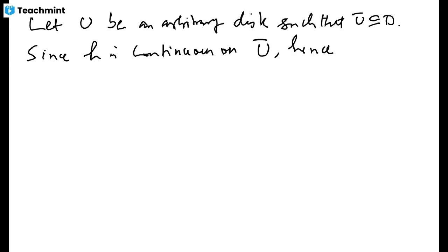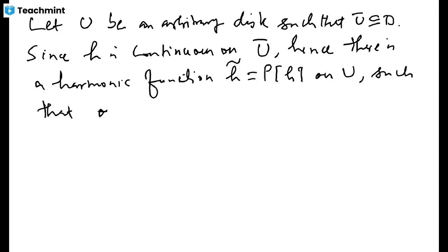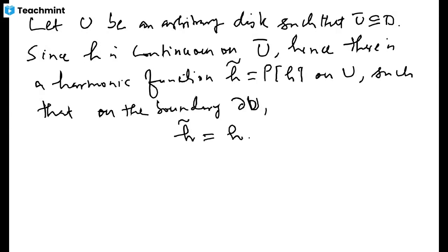So there is a harmonic function H̃, namely the Poisson integral of H on U, such that on the boundary of disk U, this harmonic function H̃ is continuous and equals H. This is what we have proved, and this is also known as the Dirichlet problem: given a continuous function on the boundary of a disk, find a harmonic function which extends it to the inside.